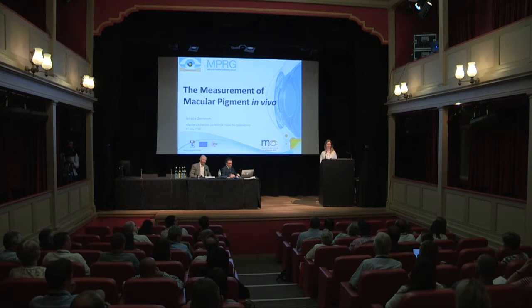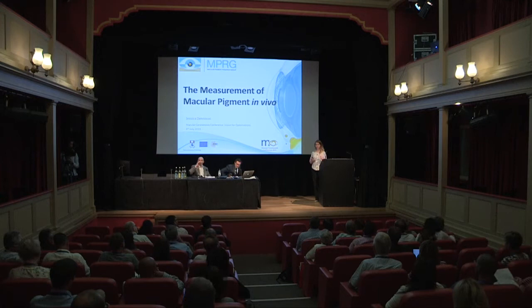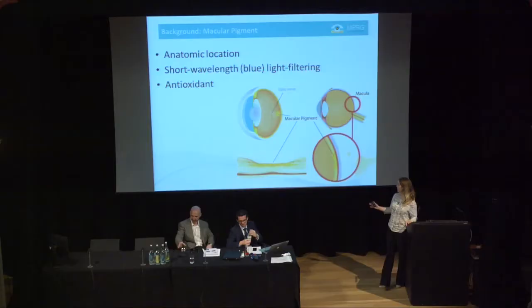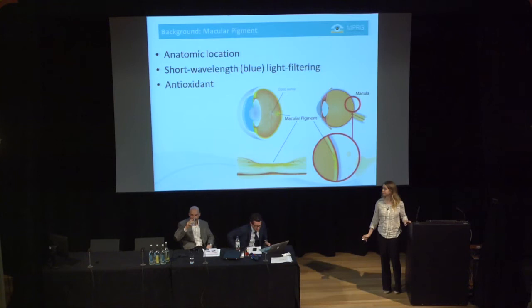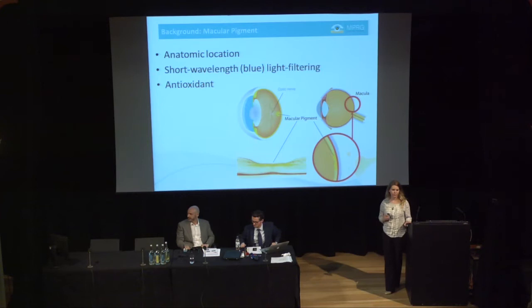Today, so far, we've been talking about the importance of macular pigment, so I'm going to talk about ways to measure it in vivo — that's in the person, that's in your patients. Just a brief overview: macular pigment is important. It has an anatomic location in the fovea, which is responsible for all your fine detail central vision. It's a blue light filter and an antioxidant, which can help prevent age-related disease.